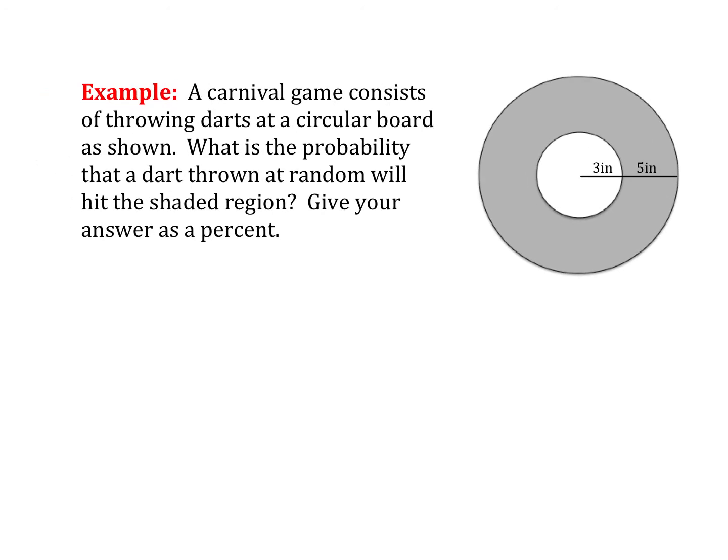Next up. A carnival game consists of throwing darts at a circular board as shown. What is the probability that a dart thrown at random, assuming you hit this board in general, but we don't know where on that board it will hit, will hit the shaded region? Give your answer as a percent. So I need to know what is the area of just this shaded region, so this little ring. I need to know the area of just that ring. And then I'll divide that by the overall area, which is the area of that big circle.